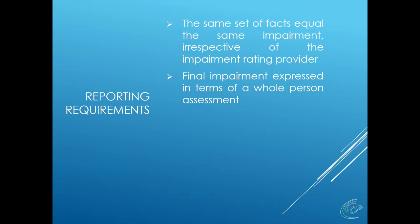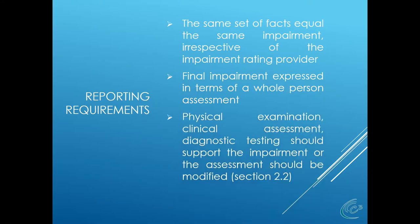Please remember the final impairment rating is expressed as a whole person impairment and must be a whole number — if it's 11.6, it rounds to 12; if it's 11.5, it rounds to 11. The physical examination, clinical assessment, and diagnostic testing should all support the impairment rating. When we review an impairment rating, we ask: did this provider justify the assessment? There are specific protocols to follow, and when they're not followed, that is quite often the basis for overturning the impairment rating.